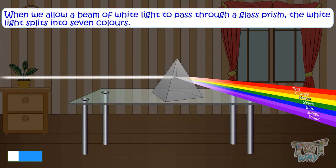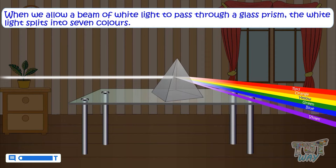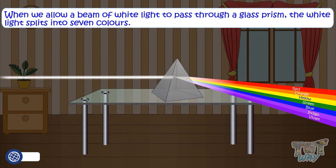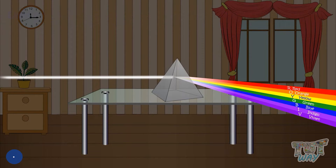The seven colors are violet, indigo, blue, green, yellow, orange, red. In short, you can say VIBGYOR.